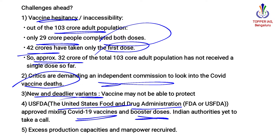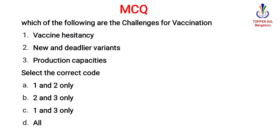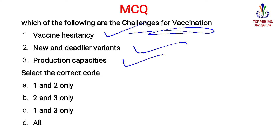India is yet to take a decision on booster doses. Excess production capacity and skilled manpower are also required to increase vaccine production. MCQ: which of the following are challenges for vaccination? The options are vaccine hesitancy, new and deadlier variants, and production capacity. The answer will be all of the above.